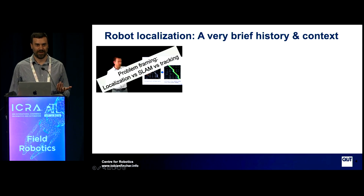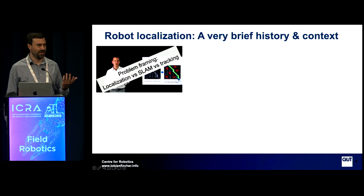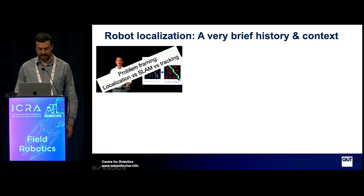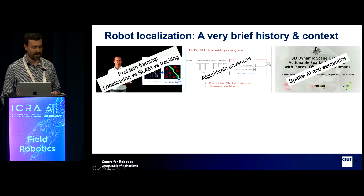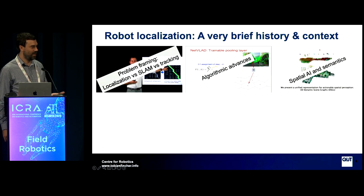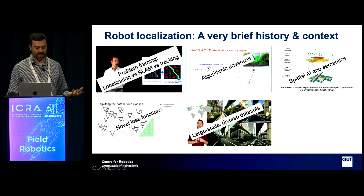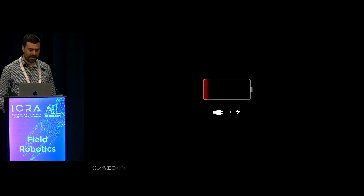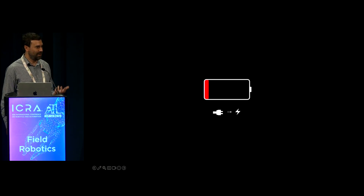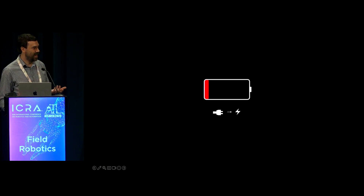Robot localization has been studied for a long time. Visual place recognition has been used as a loop closure component. There have been incredible advances in algorithms for localization and place recognition. We've seen semantics incorporated into the problem, novel loss functions, amazing large-scale diverse datasets, and new scene representations like Gaussian splats most recently. However, all of those algorithms have mostly aimed for higher accuracy — but if we can't deploy them in the long run, they're not useful. We have to watch out for energy efficiency.